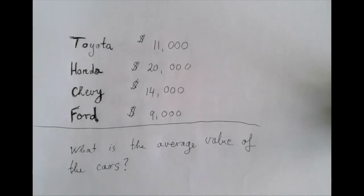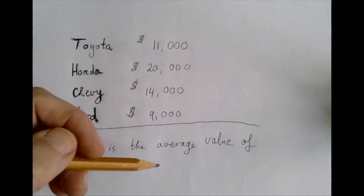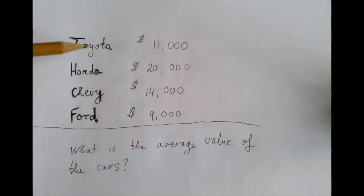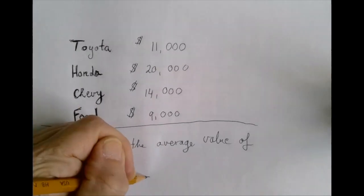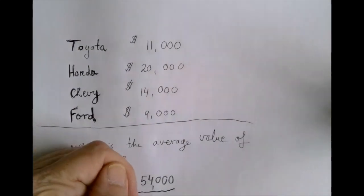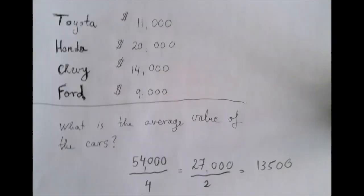The regular average works by adding all these numbers, and then dividing that sum by the number of numbers added, which is four in this case. So we add to get 54,000, and we divide it by four. The average value is $13,500.